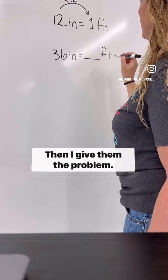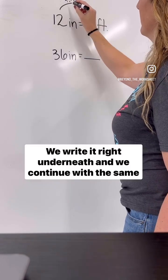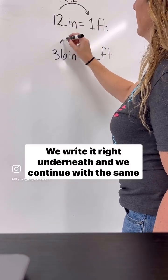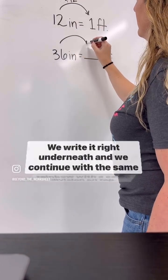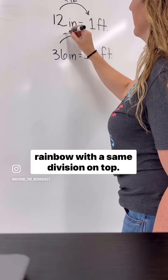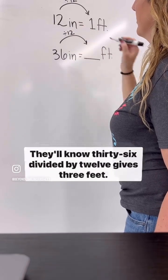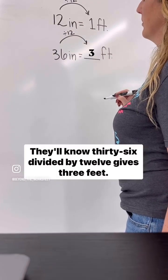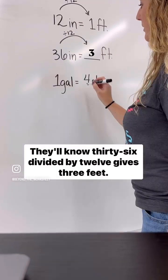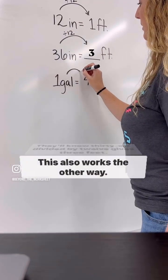Then I give them the problem. We write it right underneath, and we continue with the same rainbow with the same division on top. They'll know 36 divided by 12 gives 3 feet.